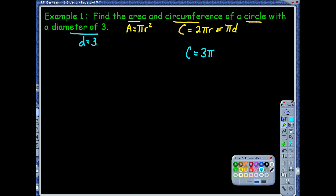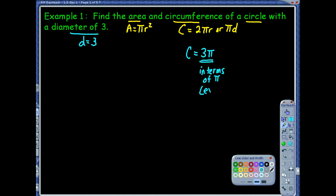I wouldn't want to write it pi 3. Think of pi like a variable — it's not a variable, it's not unknown, but when you're writing them, that's how you always want to write your answers. It's a symbol, so you always write the number in front of the symbol. This answer right here is what we call in terms of pi, and another way to think about it, this is the exact answer. Sometimes we're going to ask for the exact answer.